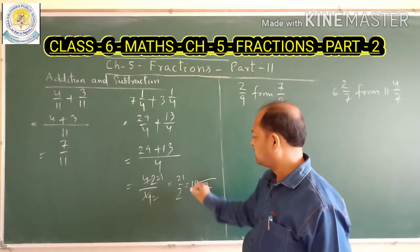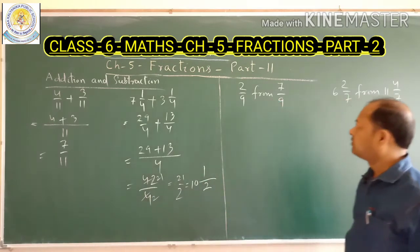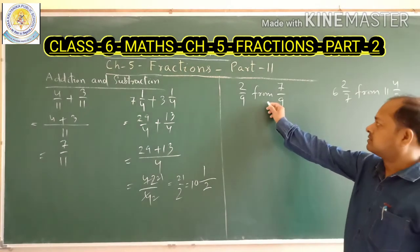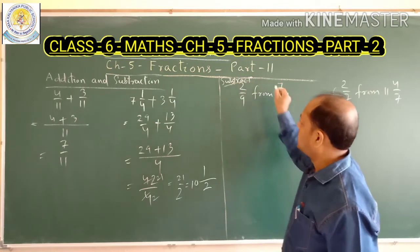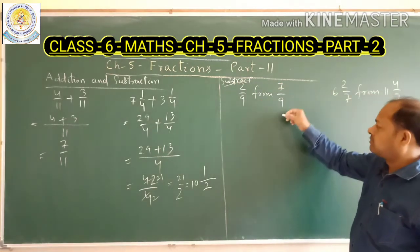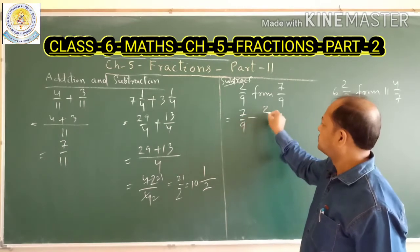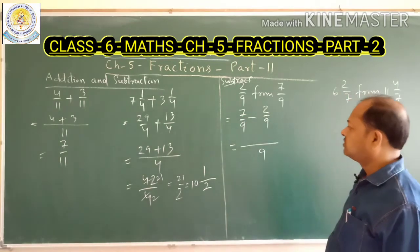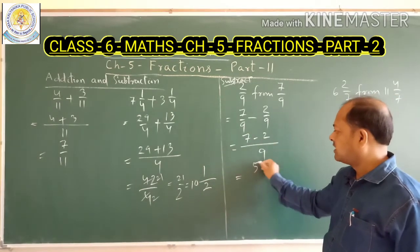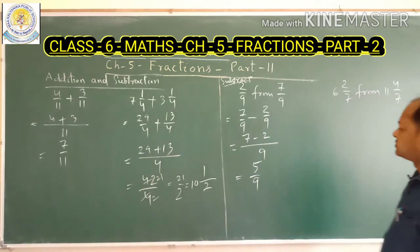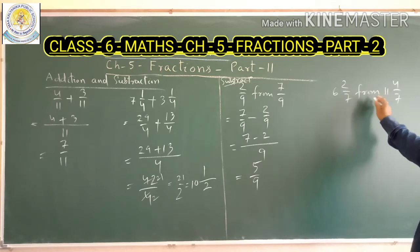Now it says subtract: subtract 2 upon 9 from 7 upon 9. So 7 upon 9 comes first: 7 upon 9 minus 2 upon 9. Here 9 is the denominator, so 7 minus 2 in the numerator gives 5 upon 9. It is a proper fraction.